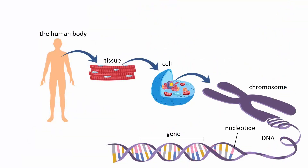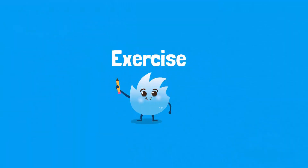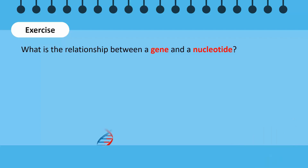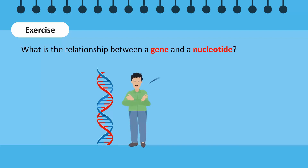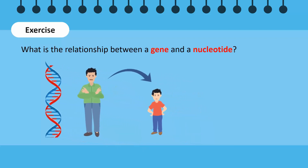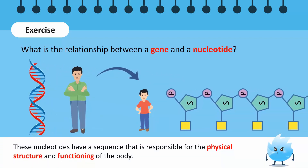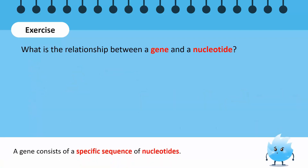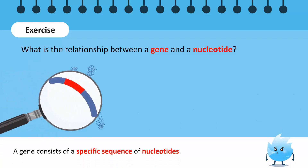You can clearly see the relationship between a gene, DNA, and a chromosome through this diagram. Time for an exercise! What is the relationship between a gene and a nucleotide? Pause this video and discuss with your friends. DNA stores information about the characteristics that are passed down to the next generation in the form of nucleotides. These nucleotides have a sequence that is responsible for the physical structure and functioning of the human body.